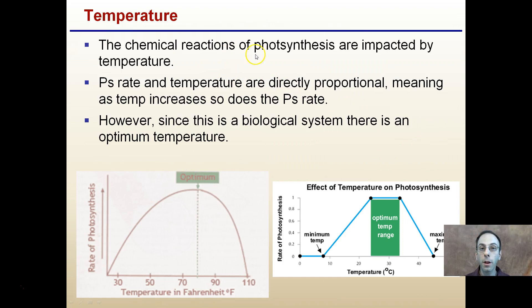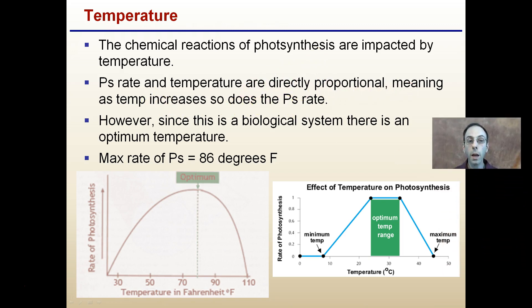Temperature is the last one. Chemical reactions of photosynthesis are impacted by temperature. The rate and temperature are directly proportional, meaning as temperature increases, so does the photosynthetic rate. However, since this is a biological system, there's an optimum temperature. Pretty much for most plants, any temperature above 86 degrees Fahrenheit is going to be the maximum rate of photosynthesis.